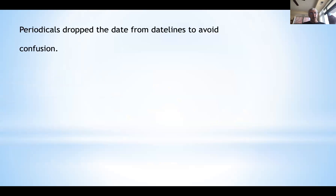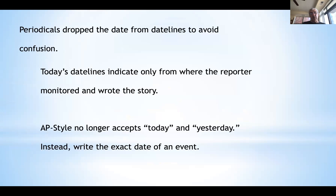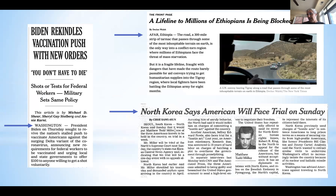To recap: periodicals dropped the date from datelines to avoid confusion. Today's datelines indicate only from where the reporter monitored and wrote the story. AP style no longer accepts 'today,' 'yesterday,' or even 'tomorrow' — instead, write the exact day of an event. Here's an example of what a dateline actually looks like now. As you can see in this one from the New York Times, the city Washington D.C. stands alone by itself and is in all uppercase letters. When filing from overseas, typically use the name of the city and the country.